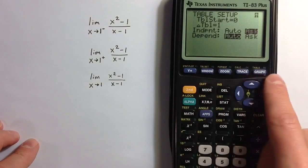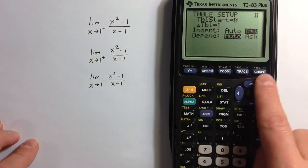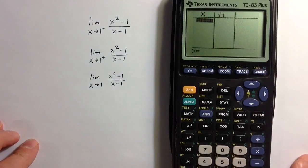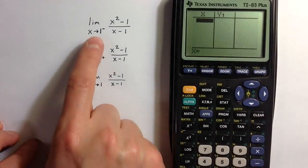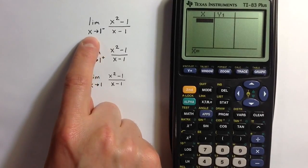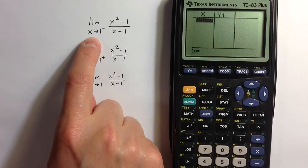So going over to the table, I'm going to hit the second command and then the graph key to get to the table. The limit from the left means the limit as we approach 1 from values to the left of 1. So the values are going to be slightly less than 1.